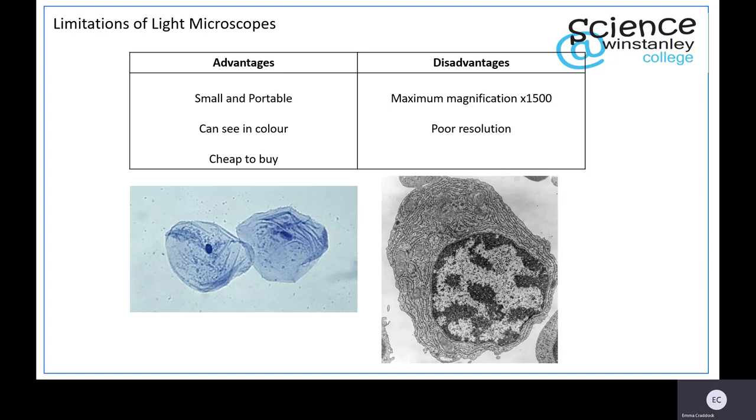Whereas here is an animal cell taken using a transmission electron microscope, which has much higher magnification and resolution. We will cover electron microscopes in a different video. Here you can see all the different organelles: the nucleus with its nuclear membrane and nucleolus, mitochondria, Golgi body, endoplasmic reticulum, and you get a really good view of those organelles.